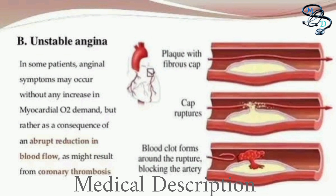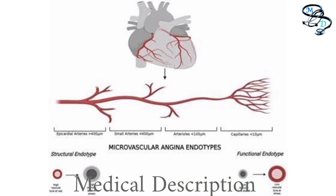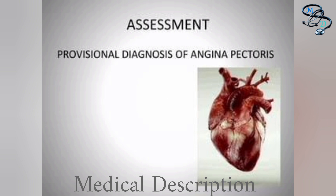Unstable angina is dangerous and a warning sign of a heart attack — seek urgent medical care if your angina is unstable. Other types include variant or Prinzmetal angina, a rare type caused by spasm in the coronary arteries, and microvascular angina, which can be a symptom of disease in the small coronary artery blood vessels.